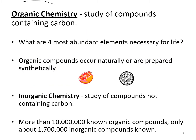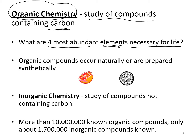Our current definition of organic chemistry is the study of compounds that contain carbon. We learned previously about the four most abundant elements necessary for life, remembered by the mnemonic HONC (honk): hydrogen, oxygen, nitrogen, and carbon. The organic compounds we'll study are primarily carbon bonded to hydrogen, then oxygen and nitrogen, plus a few other elements — but they always have to contain carbon.